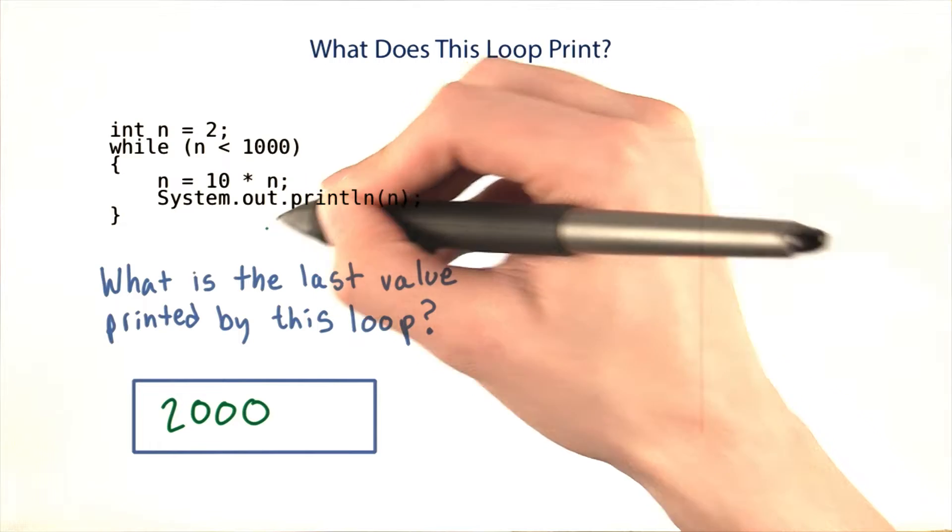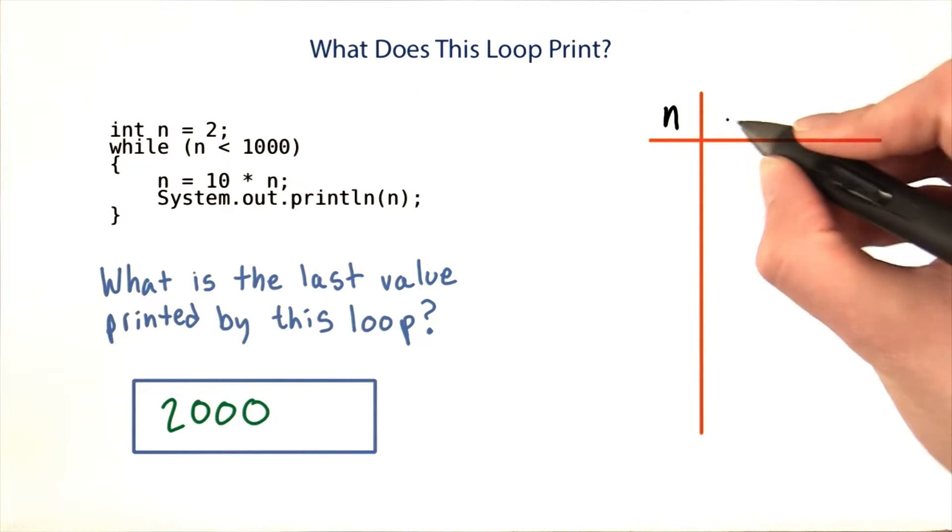Let's hand trace this code to see how this happened. I'll track the values of n and what gets output.